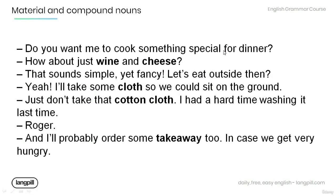Here is a short story using material and compound nouns. Listen as I read so you can see how they are used in real-life conversation. After I'm done, make sure you understand all the grammar and read aloud yourself so that you can work on your own fluency and pronunciation. 'Do you want me to cook something special for dinner?' 'How about just wine and cheese?' 'That sounds simple, yet fancy.' 'Let's eat outside then.' 'Yeah, I'll take some clothes so we could sit on the ground.' 'Just don't take that cotton cloth. I had a hard time washing it last time.' 'Roger. And I'll probably order some takeaway too in case we get very hungry.'